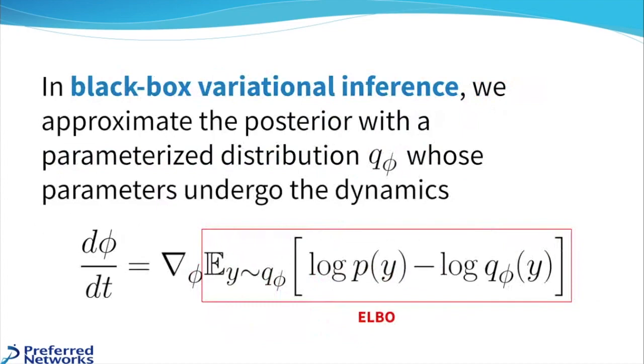In BBVI, we parameterize the distribution, the approximate posterior with parameters phi, and the parameters undergo gradient ascent on this elbow objective. So how is it that these two methods are equivalent when one deals with particles and one deals with parameters?